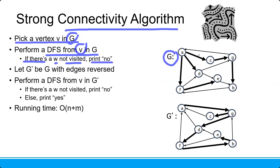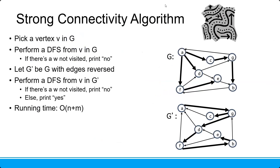For example, starting from A, I can find a path to C, I can find a path to G, I can find a path to E. From A, I can reach every possible node — all the nodes — and I can find the reachability.